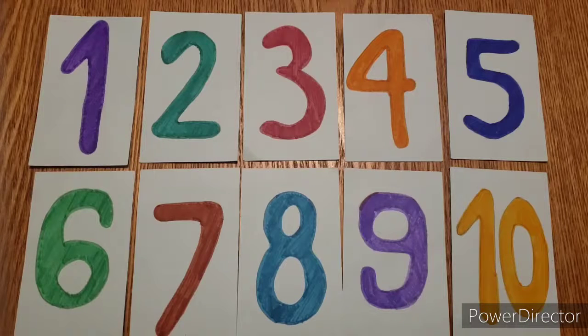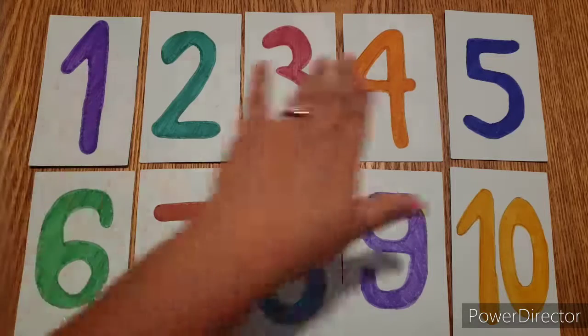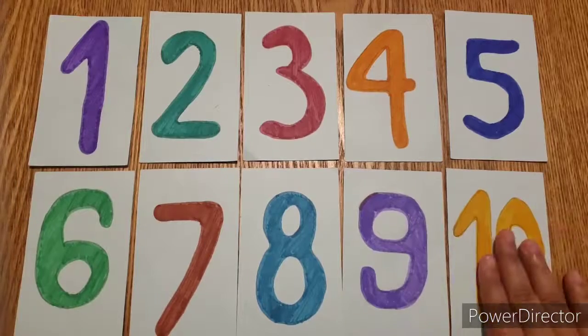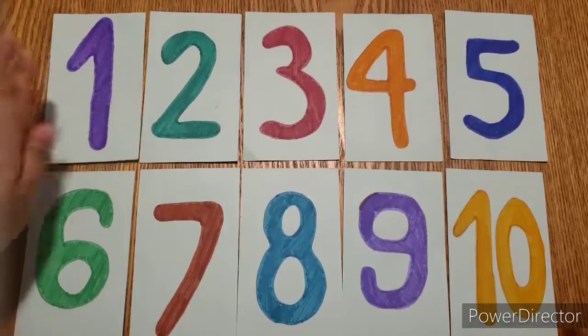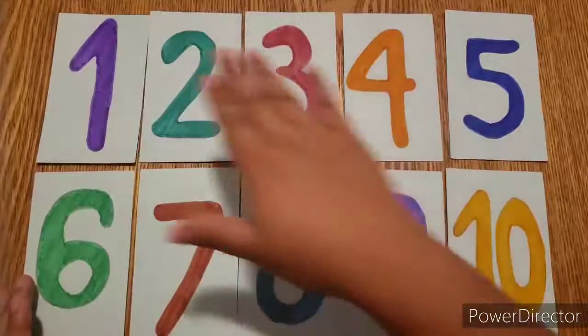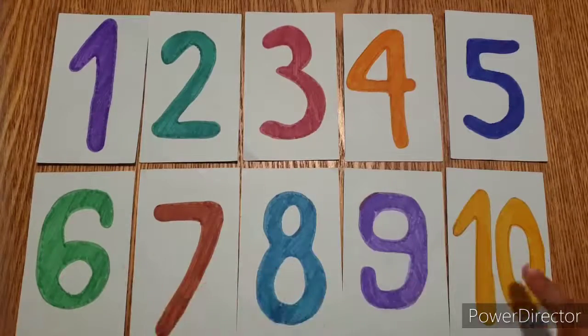Now I want to make sure you know that when we count the numbers in this order, we are counting them from least to greatest. Because 10 is the greatest number from all these numbers and 1 is the least number. So counting them from 1 to 10 is going from least to greatest.